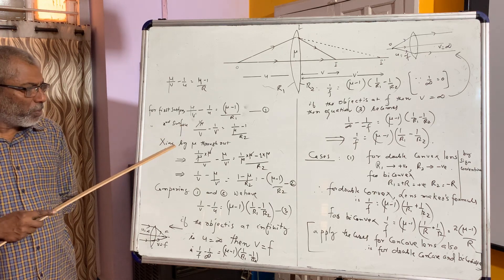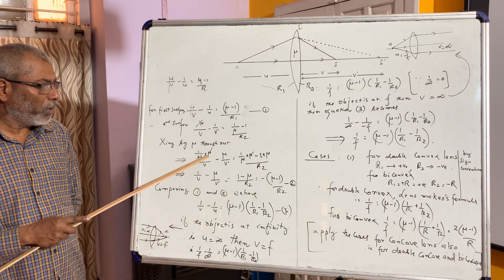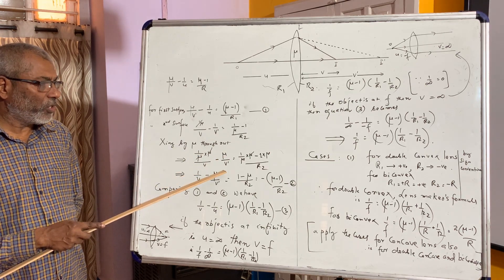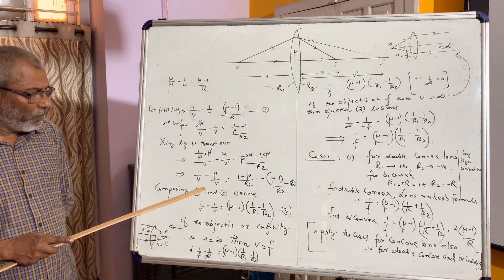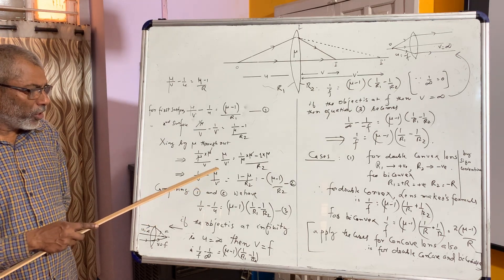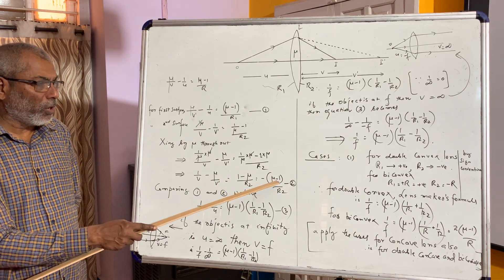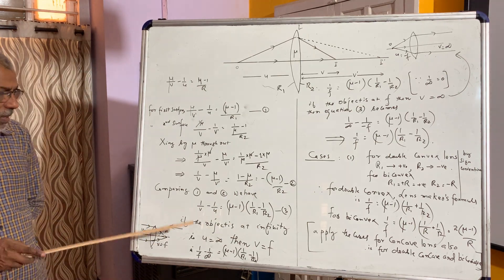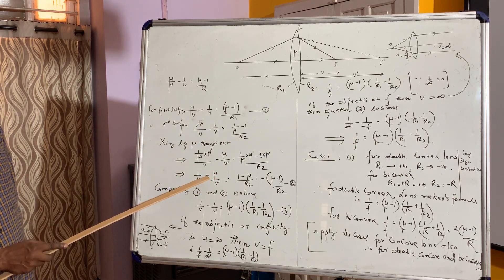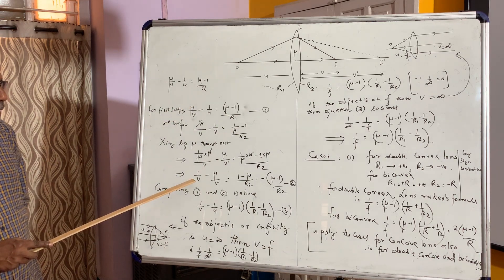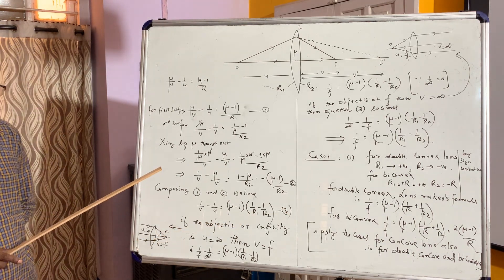The second equation is multiplied by μ throughout. Every term is multiplied by μ: 1/V minus μ/V' is equal to (1 minus μ)/R2, which equals minus (μ minus 1)/R2. This is equation number 2. Comparing equations 1 and 2, the μ/V' and minus μ/V' terms cancel, and we get: 1/V minus 1/U is equal to (μ minus 1) into (1/R1 minus 1/R2). This is equation number 3.